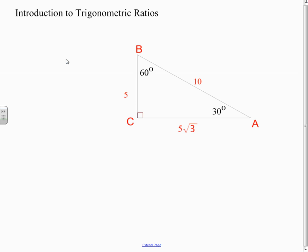Greetings. This is going to be about trigonometric ratios, the exciting world of trigonometry. We're going to start off by looking at this triangle that we've been looking at recently, which is a 30-60-90 triangle. One of the observations you can make here is...